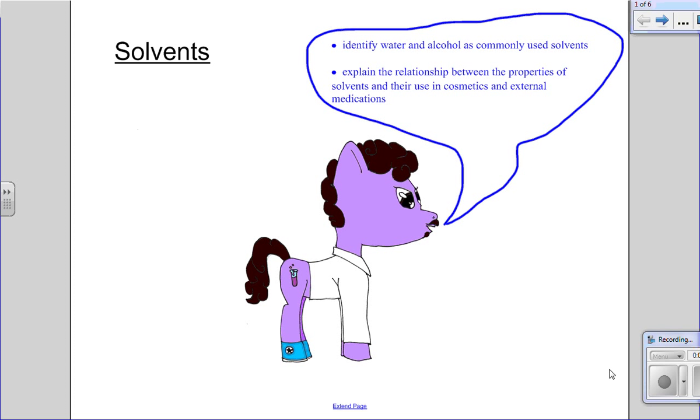So the dot points we're starting with today are: identify water and alcohol as commonly used solvents, and explain the relationship between properties of solvents and their use in cosmetics and external medications, so medications for outside the body.